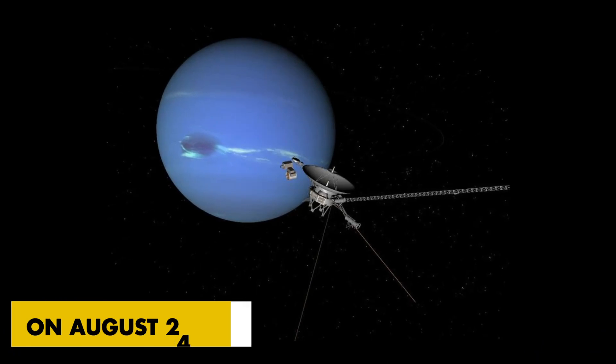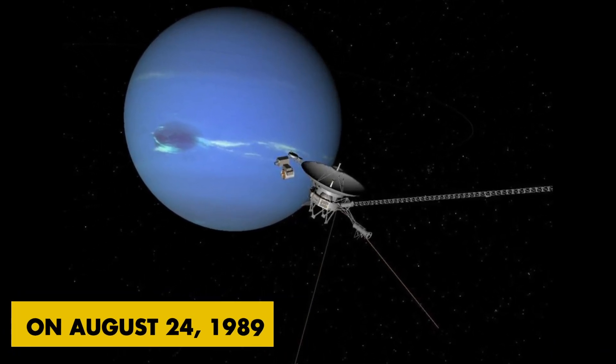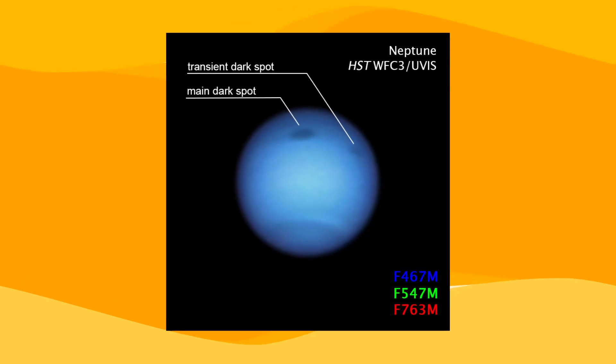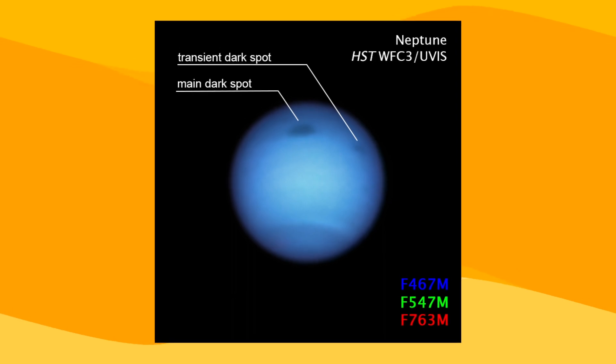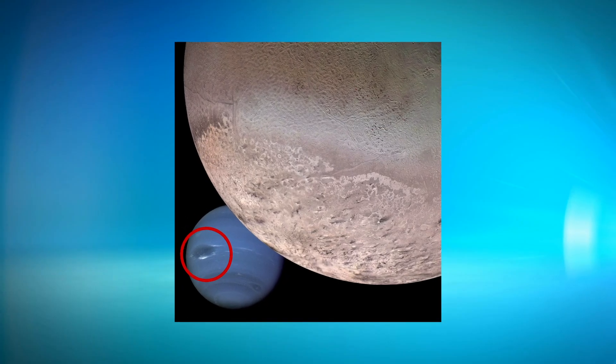On August 24th, 1989, Voyager 2 captured its first image of the planet just less than five days before it had its closest encounter with Neptune. The photograph showed the great dark spot, a storm in Neptune's atmosphere, and its stunning light blue cloud smear.